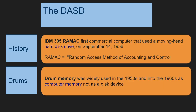The Direct Access Storage Device history started in 1956. IBM invented the spinning disk and called it the RAMAC. For years people used to call disks RAMACs. The IBM 305 RAMAC was both a mainframe and a disk combined — it was the first commercial computer with a disk inside.